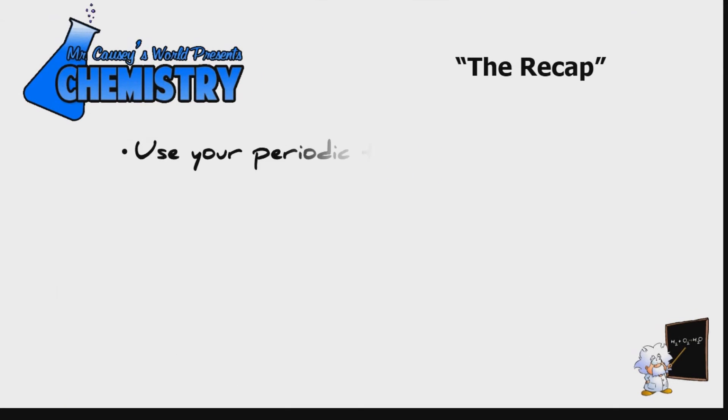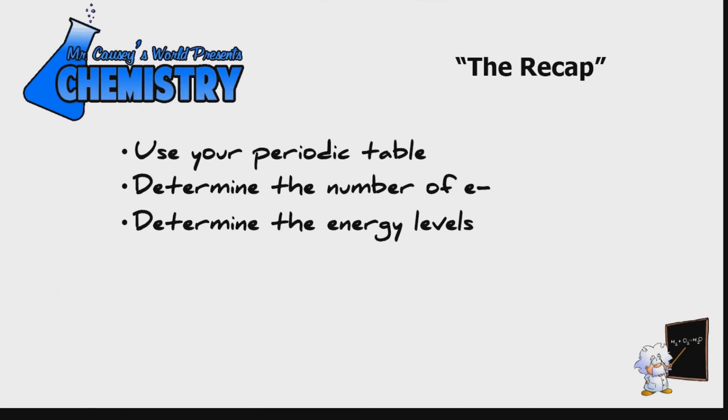In the recap, use your periodic table. Determine the number of electrons. Determine the energy levels. Determine the orbitals. And write the electron configuration and orbital notation.